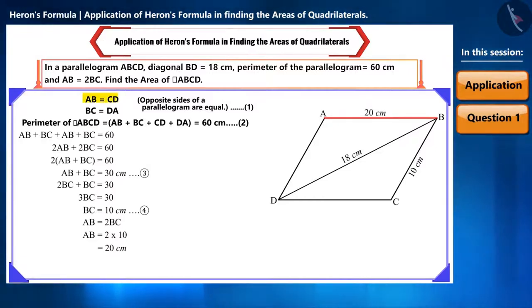Since AB is equal to CD, the measure of CD will also be 20 cm. And BC is equal to DA, hence DA will also be 10 cm.